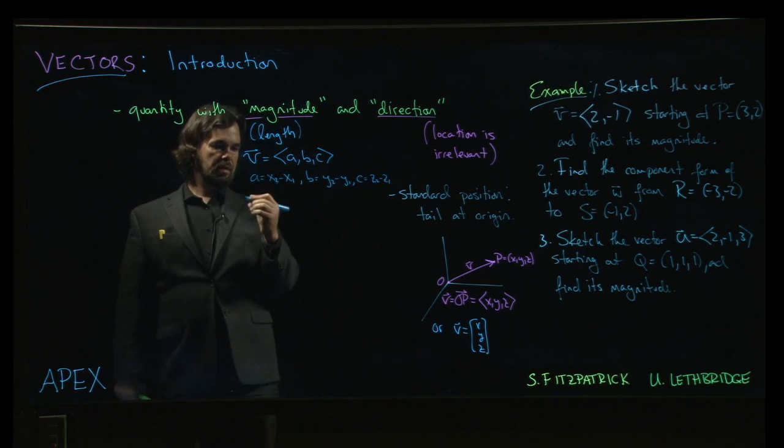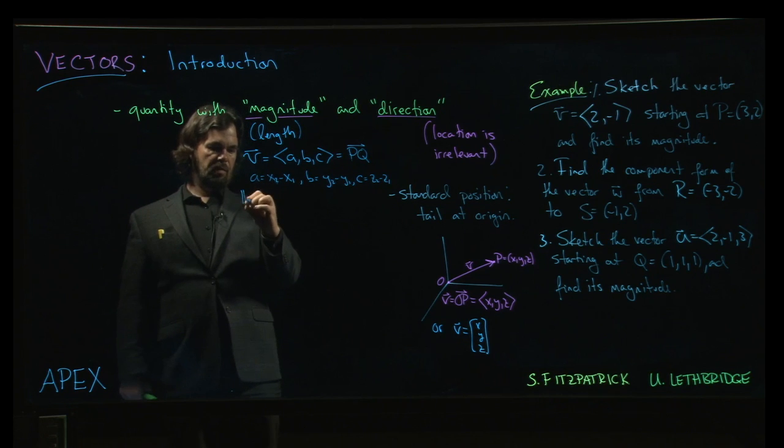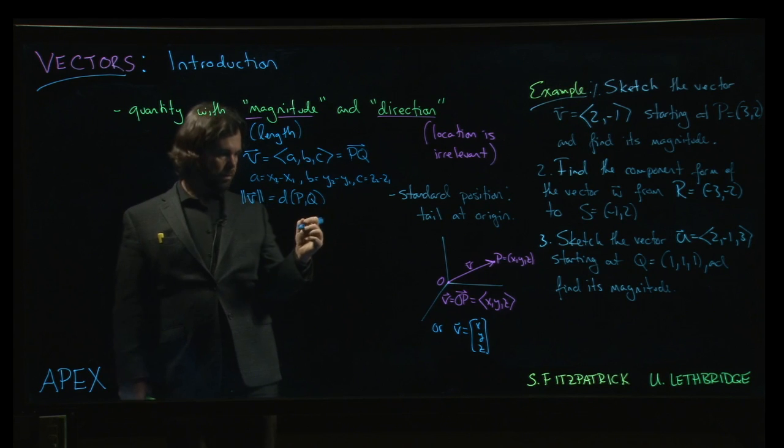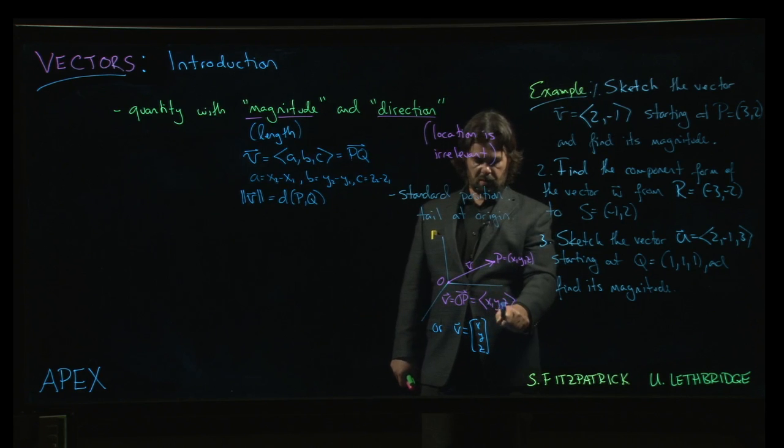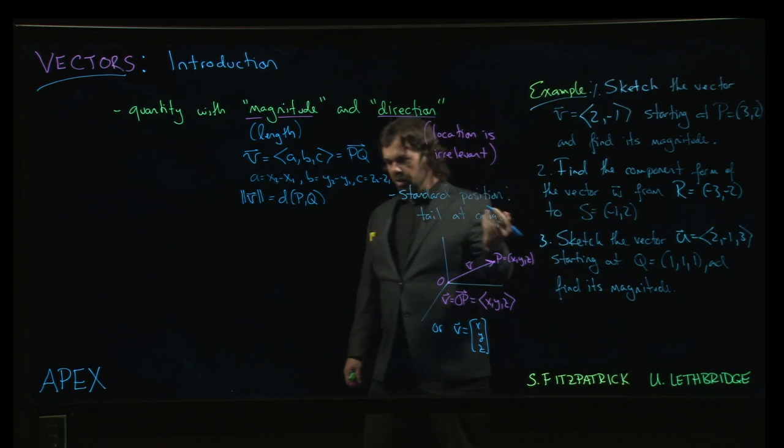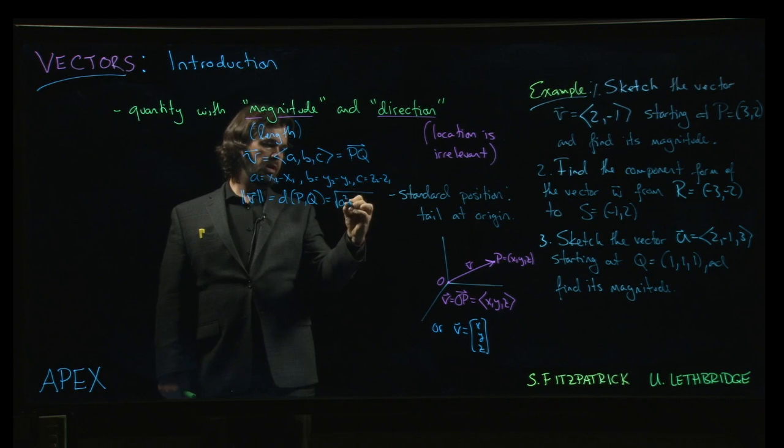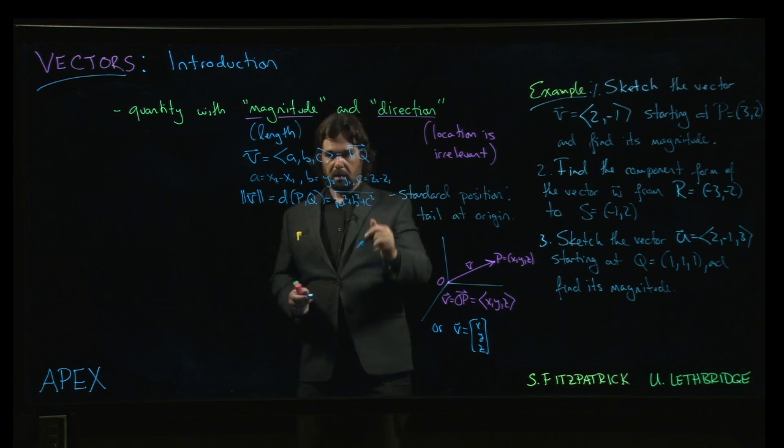The magnitude of, so let's say this is PQ. The notation we use, we use these double bars. So the magnitude of V was just the distance from P to Q. And of course, if we start at the origin, well, then the X, Y, Z components are the same as just the distance from the origin to that point. We know how to do that. It's just a sum of squares under the square root. It's A squared plus B squared plus C squared. And if we're talking about vectors in the plane, we drop the last component.